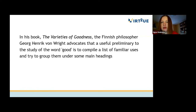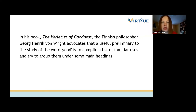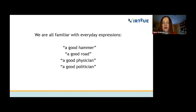So what is goodness? We will look at the philosophy of Finnish philosopher Georg Henrik von Wright in this context. In his book, The Varieties of Goodness, von Wright advocates that a useful preliminary to the study of the word 'good' is to compile a list of familiar uses and try to group them under some main headings.